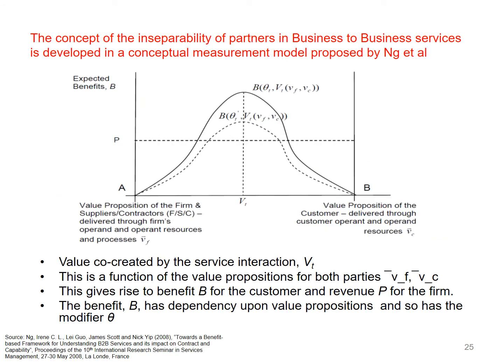Ari Nung's model looks at the inseparability of partners in business-to-business services. It's a conceptual model that fundamentally looks at value co-creation in a service interaction between two different parties A and B. This is a function of the activities of both parties, giving rise to benefit B for the customer and revenue P for the firm. The benefit B has dependency upon value propositions with a modifier theta. Depending on how much contribution either party puts in towards value co-creation, you either create more or less value.